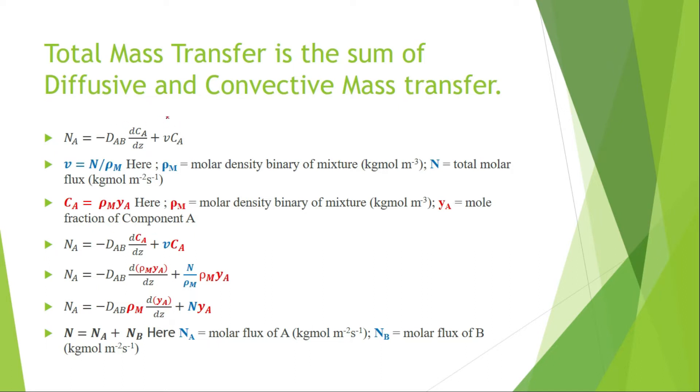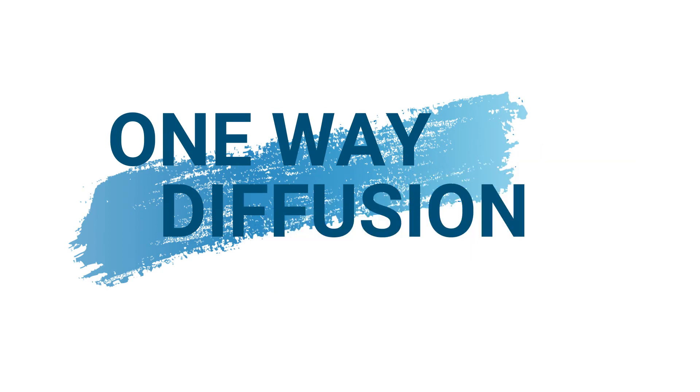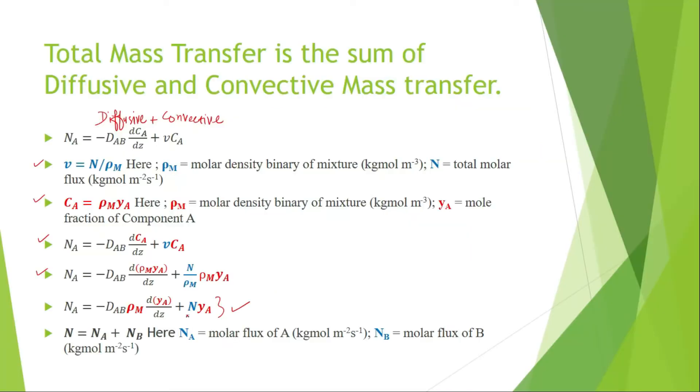The total mass transfer is the sum of both convective and diffusive mass transfer. By following these steps, our final equation in differential form for mass transfer will be: in this equation, N is the total molar flux of both components A and B.